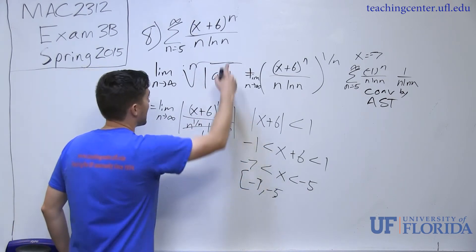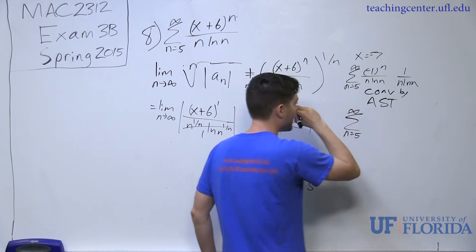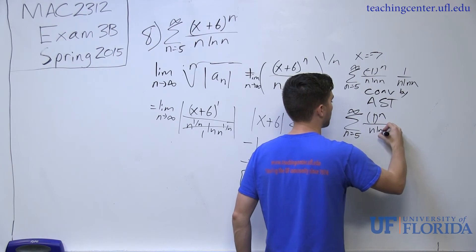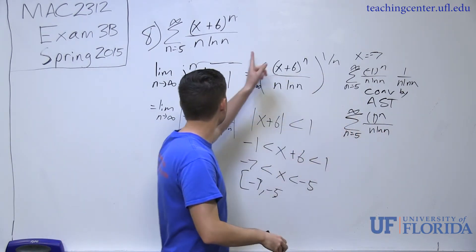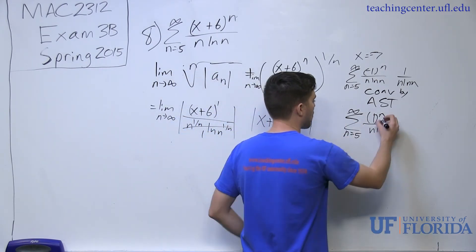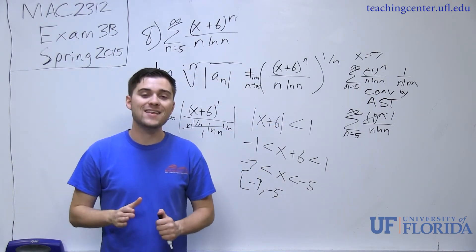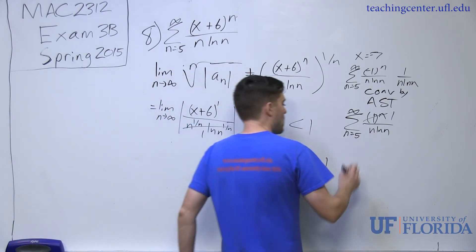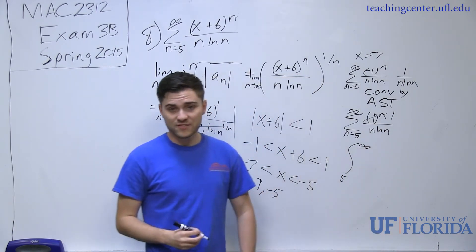Now for the other side, we plug in x equals negative 5. We have n equals 5 to infinity of 1 to the n over n natural log of n. This is no longer an alternating series because when we plug in negative 5, 6 minus 5 is equal to 1. 1 to the n is just going to be 1 for all time. What we are really looking at is the series of 1 over n natural log of n, and we need to figure out whether or not that converges or diverges. This series itself actually diverges by integral test.